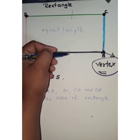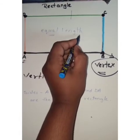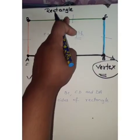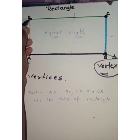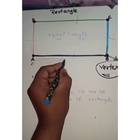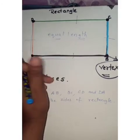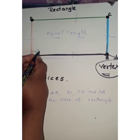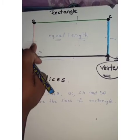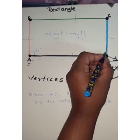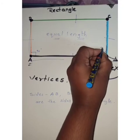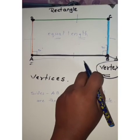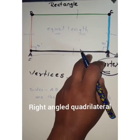The opposite sides of a rectangle are of equal length — you can see the opposite sides are equal. A rectangle also forms a right angle — it is exactly 90 degrees. So a rectangle is also called a right-angled quadrilateral.